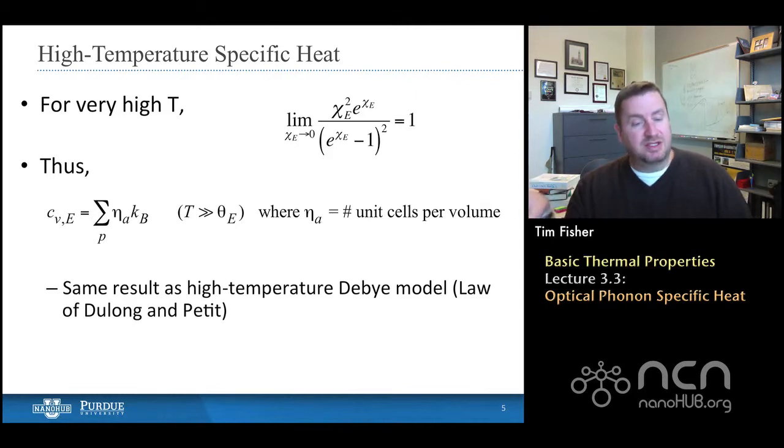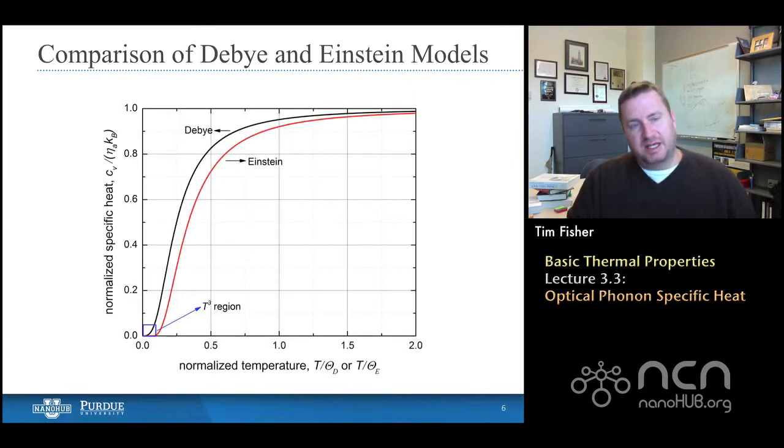And this is actually the same result that we had for the Debye model in the high temperature limit, we called it the law of Dulong and Petit, and we said it was three times eta times k, because we were saying that there were three branches, and we could do the same thing here for a three-dimensional problem. But if we had fewer dimensions or fewer branches, then you would just add the appropriate terms there. So that's the high temperature version of it.